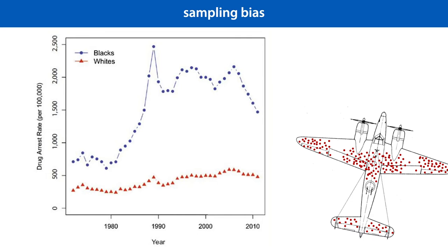In that particular case, we weren't seeing the planes that didn't come back. In our case, we aren't seeing the white people that don't get arrested. Note that it's not just algorithms that suffer from this problem. If we leave individual police officers to decide when to stop and search somebody, they will likely rely on their own experience. And the experience of a police officer is not uniform. If they already arrest far more black than white people, they are extremely likely to end up with the same bias that an algorithm would end up with.